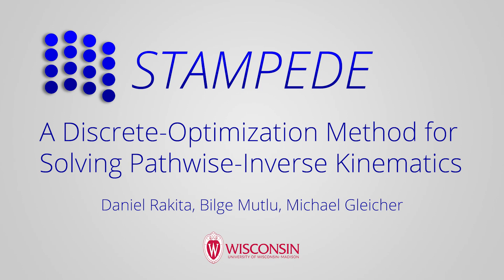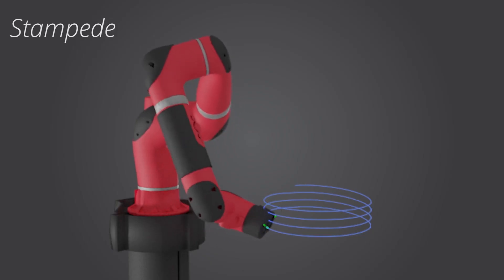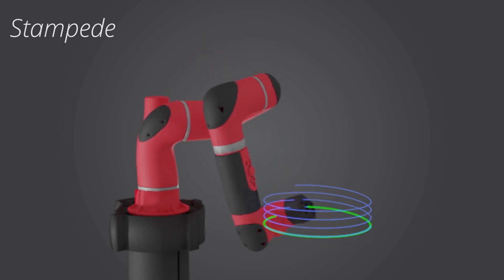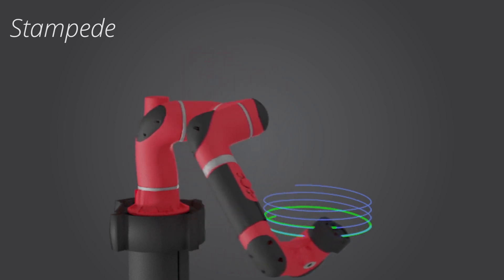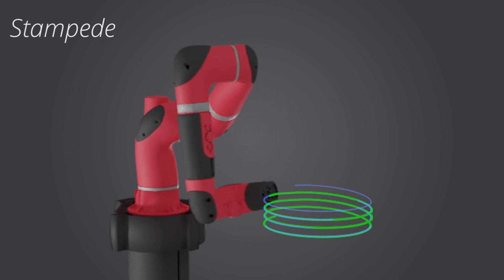In this video, we present visual examples of our Pathwise Inverse Kinematics method, called Stampede, compared against alternative robot trajectory synthesis methods. Our method is able to generate smooth, feasible robot arm motions that match a given end-effector path with very high accuracy.